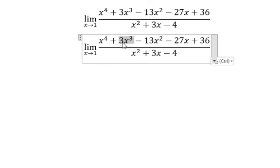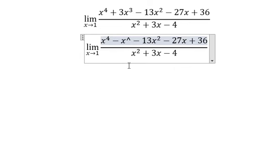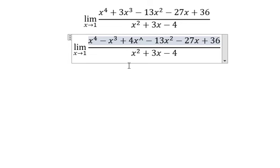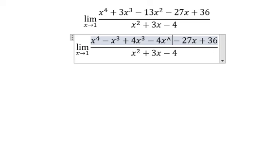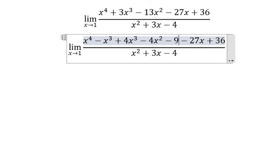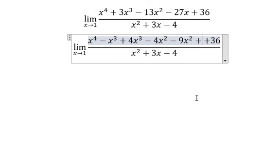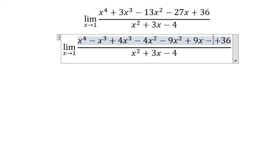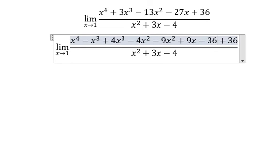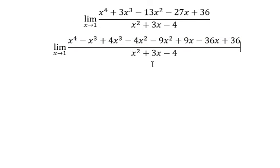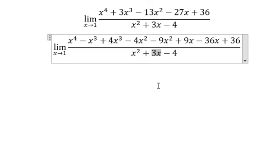About 3x to the power of 3, we can put into negative x to the power of 3 plus 4x to the power of 3. This one we can put into 4x square plus or 3 minus 9x to the power of 2. This one in here we can put positive 9x minus 36x. 3x we can put into negative x plus 4x.